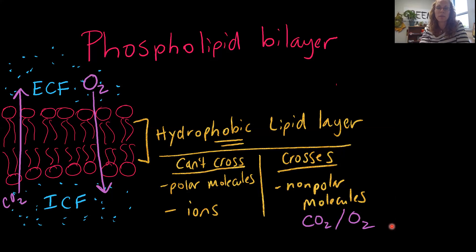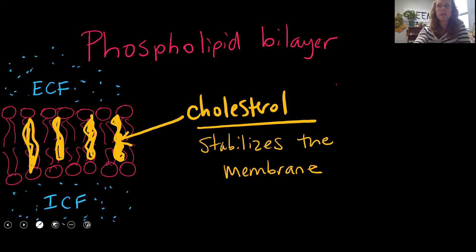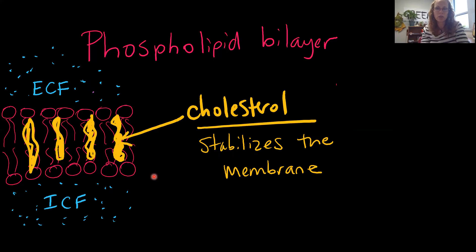We can describe the membrane as semi-permeable or selectively permeable: if you're lipid soluble, you can cross without assistance, but if you are polar, have a charge, or are an ion, you cannot cross without some kind of help. We have our phospholipid molecule as part of that semi-permeable structure, and then the cholesterol molecule, which is lipid embedded into the fatty acid tails, really helps to stabilize the structure — otherwise there wouldn't be enough rigidity to the cell membrane.